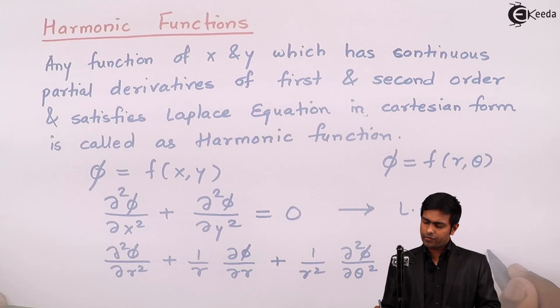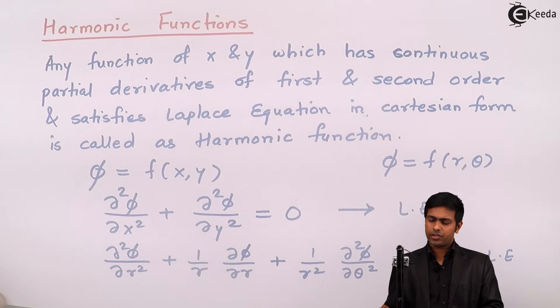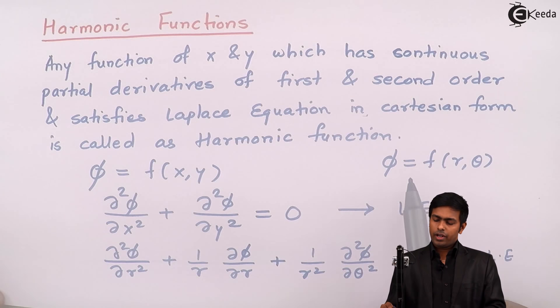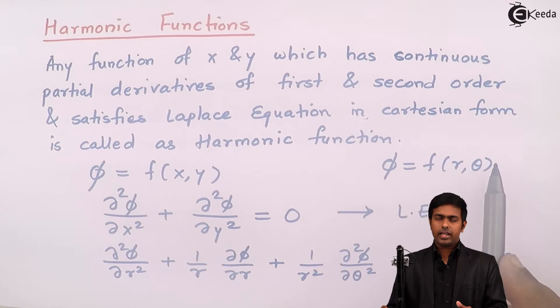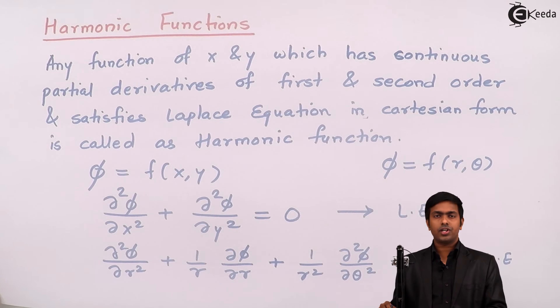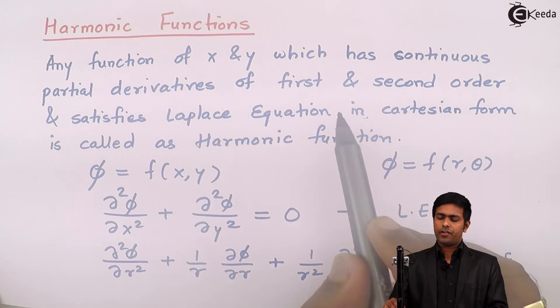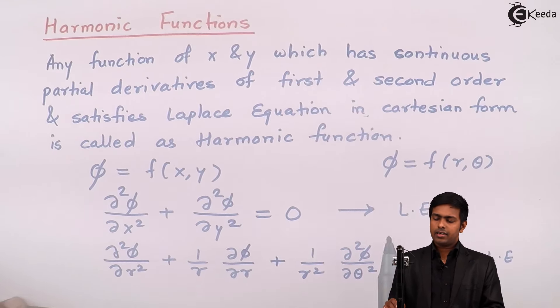This is the Laplace equation in polar form, and the earlier one is in Cartesian form. If your function is in terms of r and theta, it should satisfy the Laplace equation in polar form. If it satisfies that and has first and second order derivatives, then phi is a harmonic function.